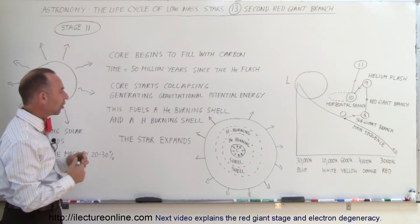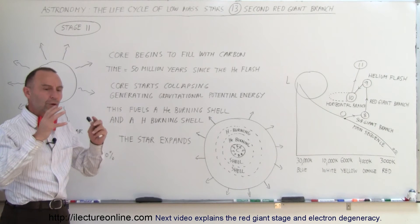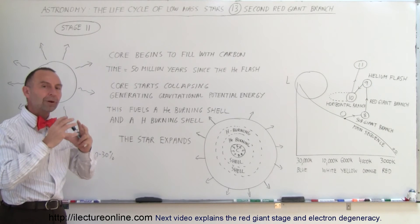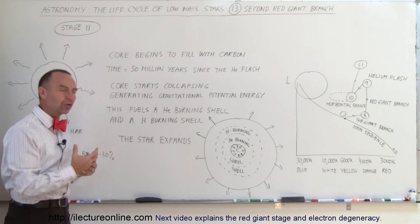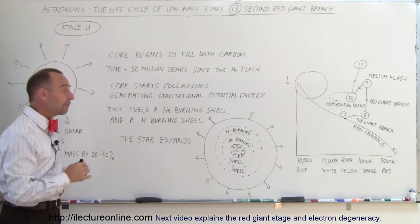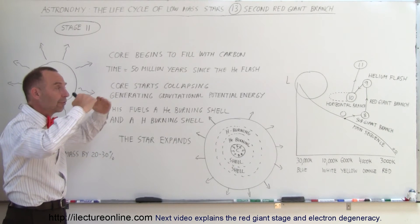This continues to go on until the star reaches a point where the core is again going to be arrested by the repulsive force of the electrons, the electron degeneracy. During that stage the star grows to a very large size.